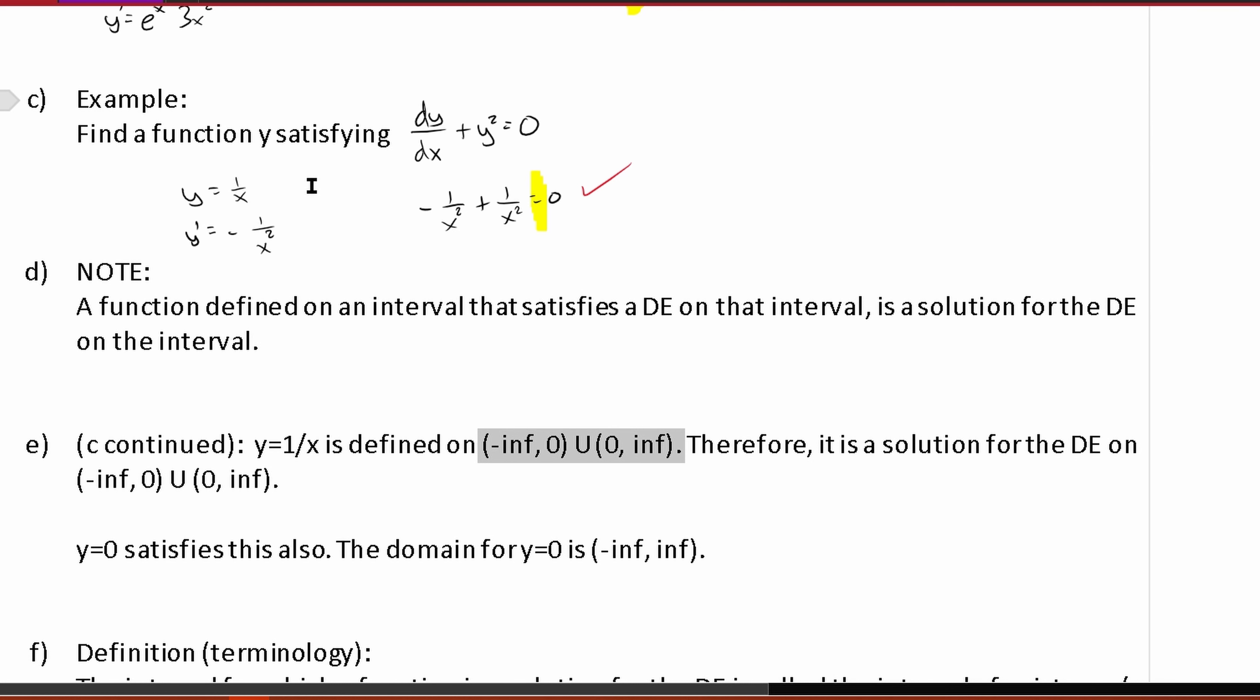So the solution for the DE on (-∞, 0) union with (0, ∞) is this 1 over x. So 1 over x is a solution. So it is a solution. This could be replaced with 1 over x. Therefore, 1 over x is a solution for the DE on this right here. This is the interval.